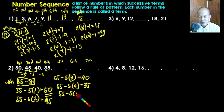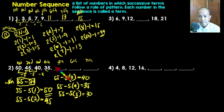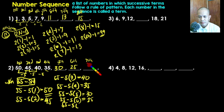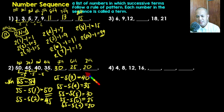For the fifth term, putting n equals five: five times five is twenty-five, 55 minus twenty-five gives thirty. So our fifth term is thirty. For the sixth term: five times six is thirty, 55 minus thirty gives twenty-five. For the seventh term, substituting n equals seven: five times seven is thirty-five, 55 minus thirty-five gives twenty. So our seventh term is twenty.